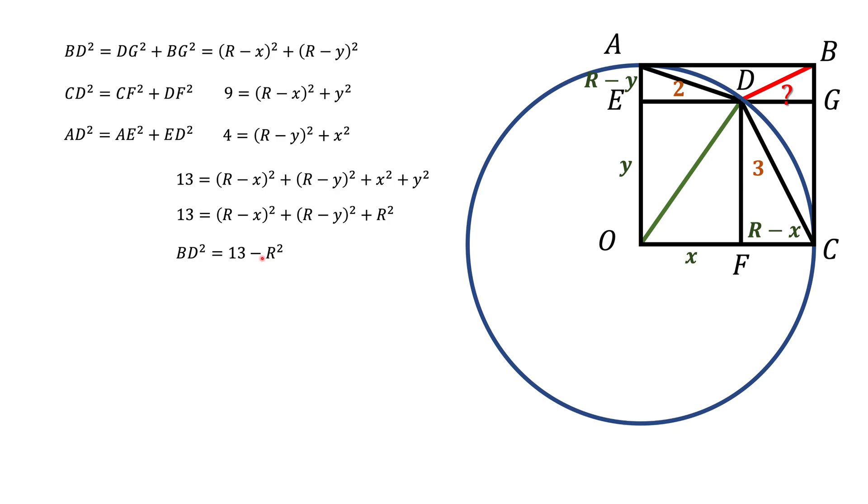Now, one way to find R squared is by technique I described before when we use inscribed angle ADC and apply law of cosines, for example.